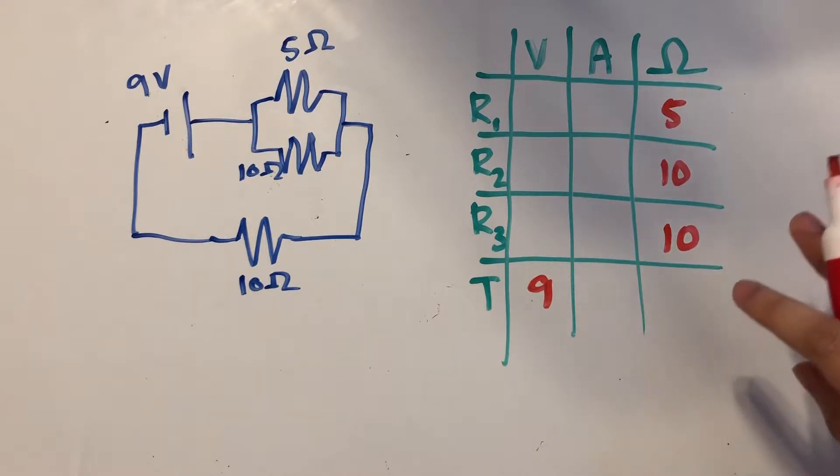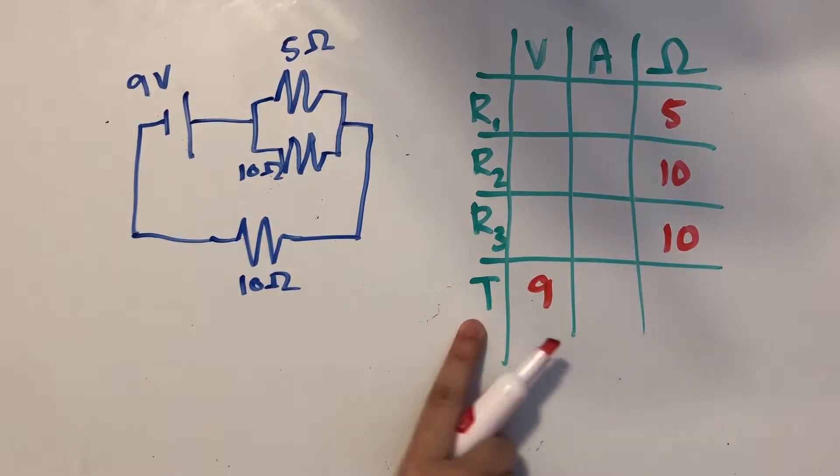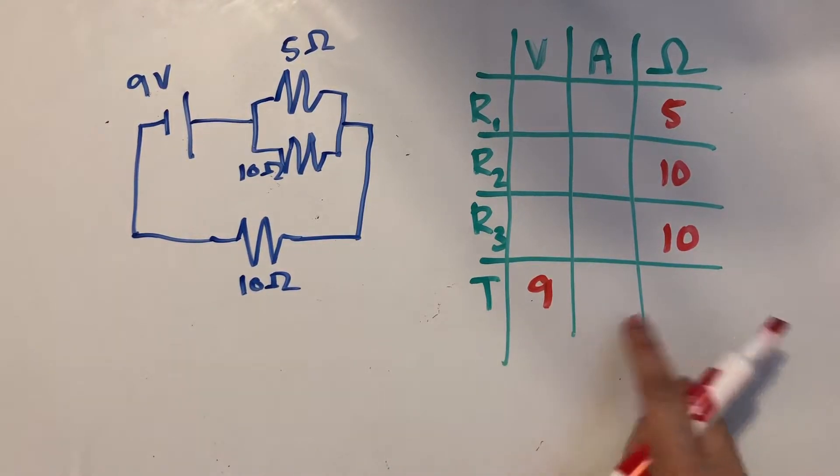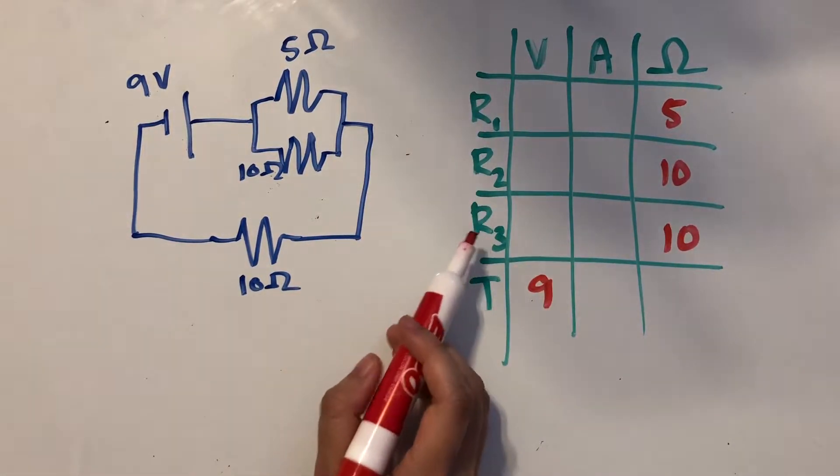It might seem like a lot, but once you know Ohm's law and Kirchhoff's rules, it's actually not that bad. So the first thing I would do is try to find the total resistance. This row is for all the total voltage, current, and resistance, and then these rows are resistor 1, resistor 2, and resistor 3.